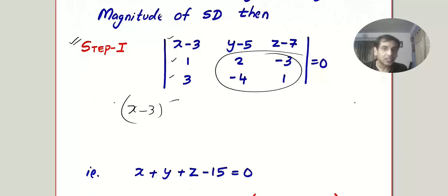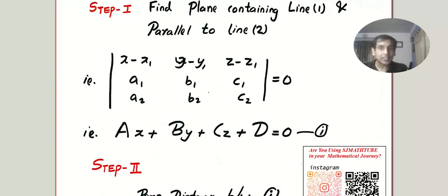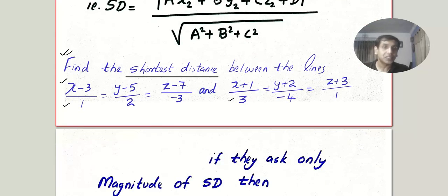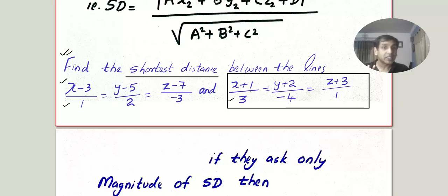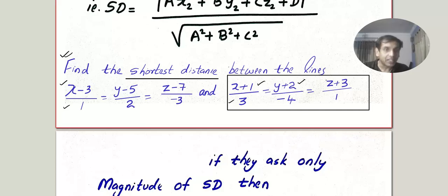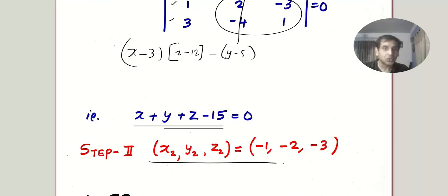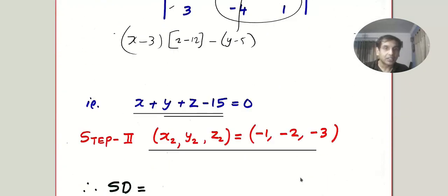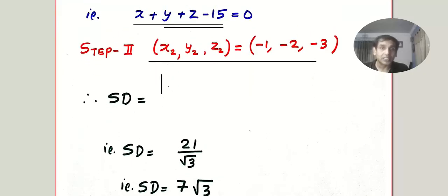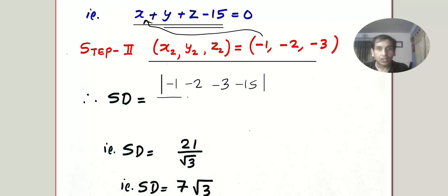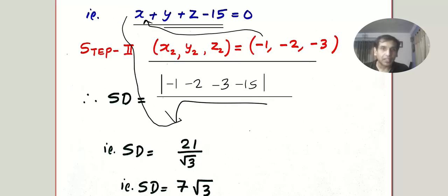Expanding the determinant gives: (x − 3) times the 2×2 minor, minus (y − 5) times its minor, and so on. That gives the equation of the plane. Step 2: extract a point from the second equation by reading its numerator — the point is (−1, −2, −3). Then calculate the perpendicular distance: plug (−1, −2, −3) into the plane equation, take the modulus, and divide by √(1² + 1² + 1²). You get the same answer, 7√3, but without finding the equation of the line.